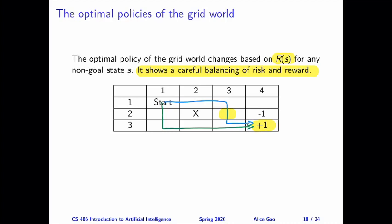Because taking every step is going to cost us a little bit. So how would the optimal policy balance these rewards and the risks? Let's take a look.